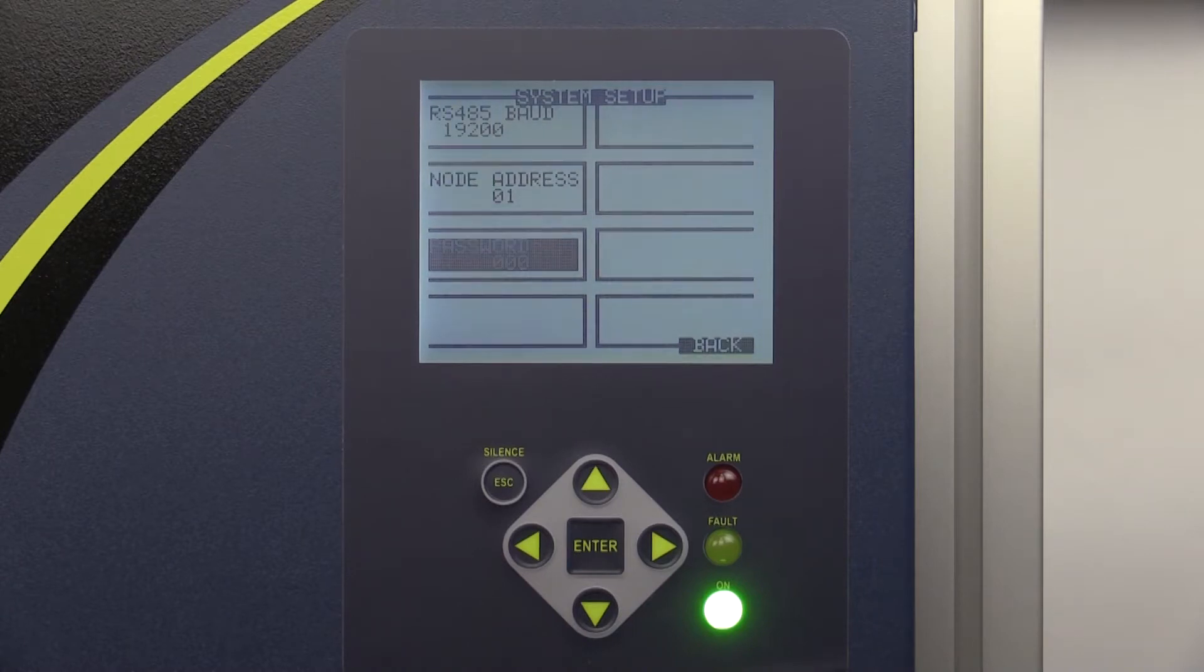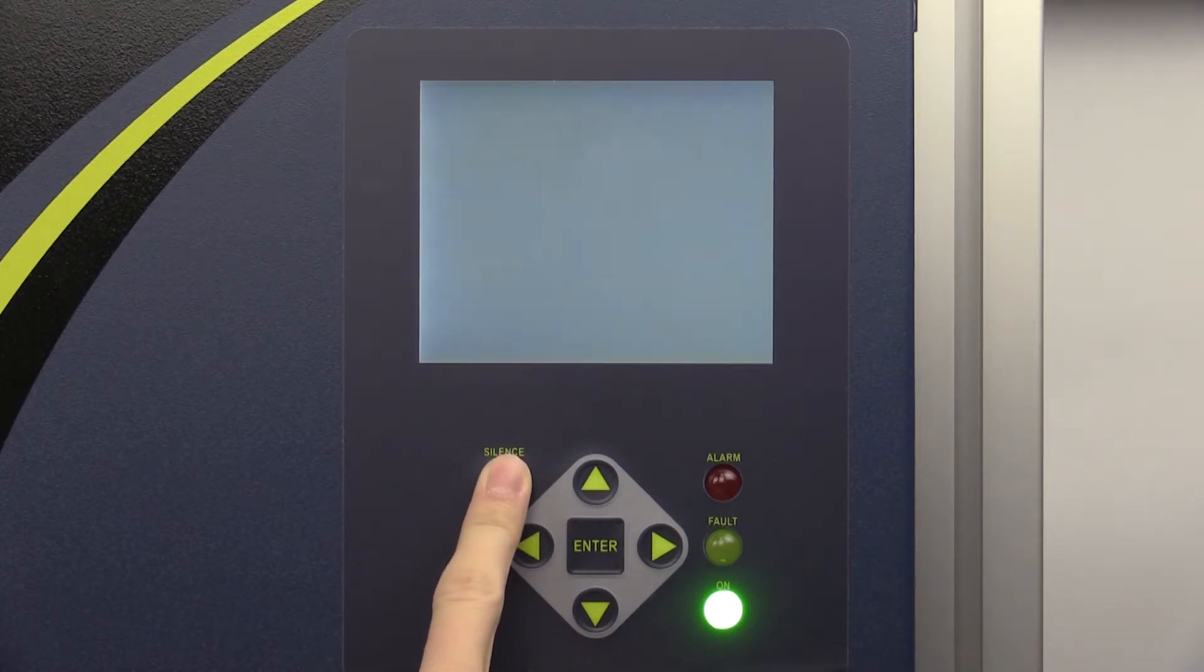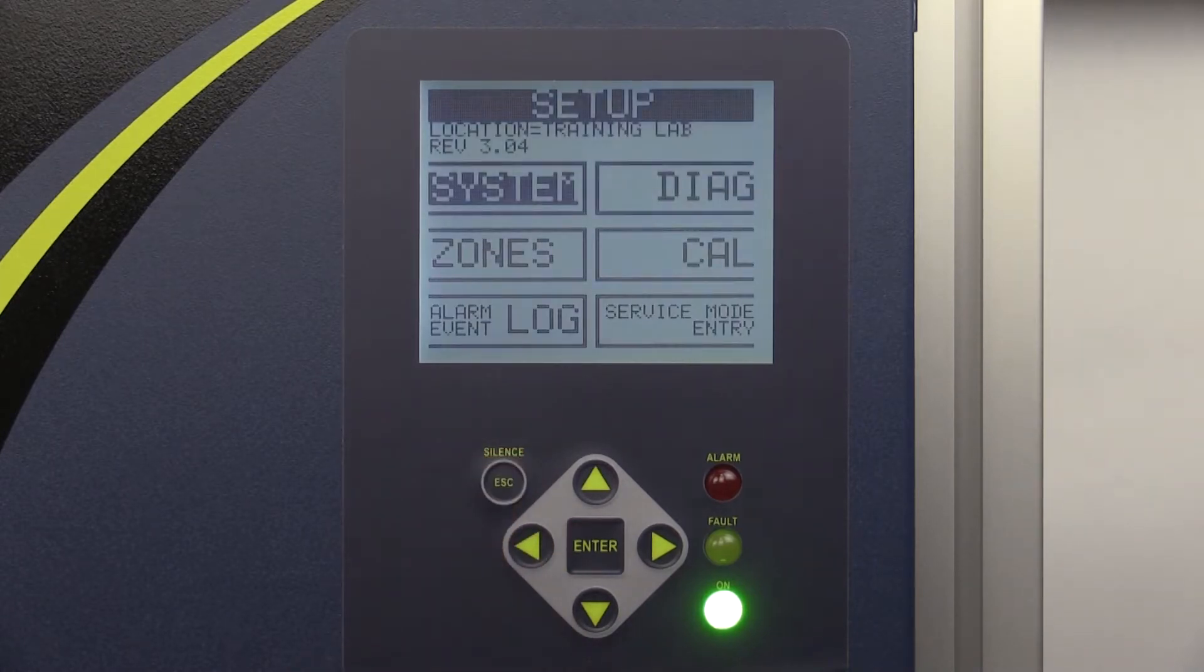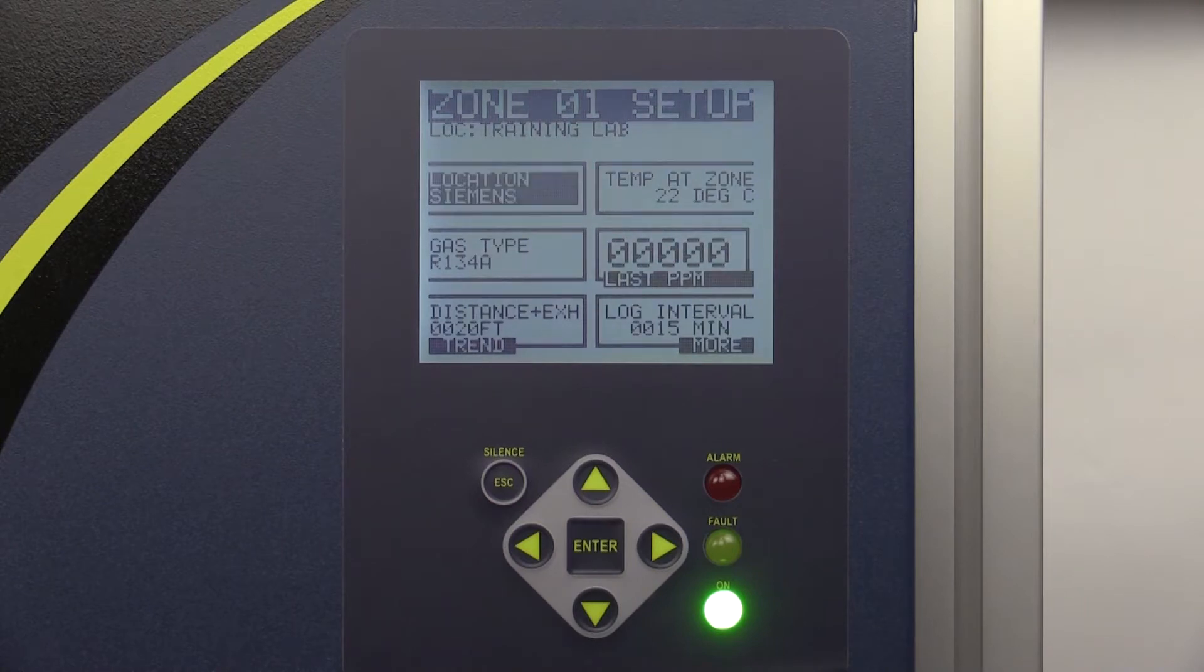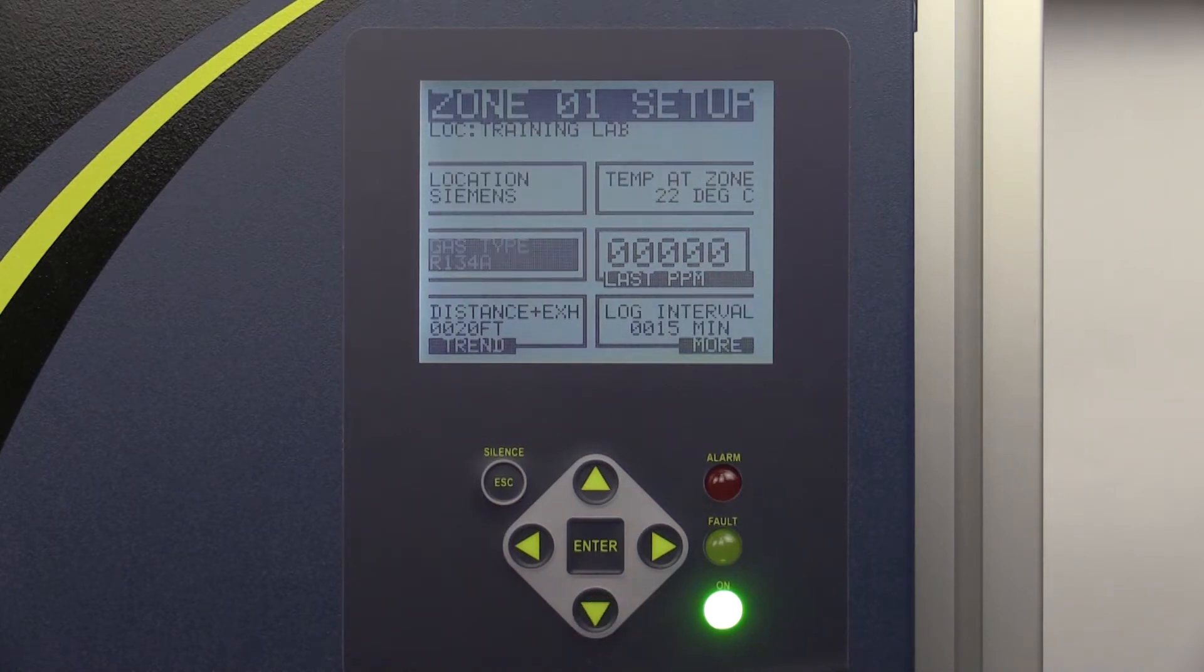Press the Escape button on the keypad to return to Setup screen. Enter the Zone Setup screen by highlighting the Zone tabs on the Setup screen and pressing Enter. The screen should now read Zone 1 Setup. Edit the Location tab to name the location of the specified zone. The Gas Type tab determines what gas the system will detect at a specified zone. Change the tab to the desired gas. Each zone is capable of searching for a different gas.